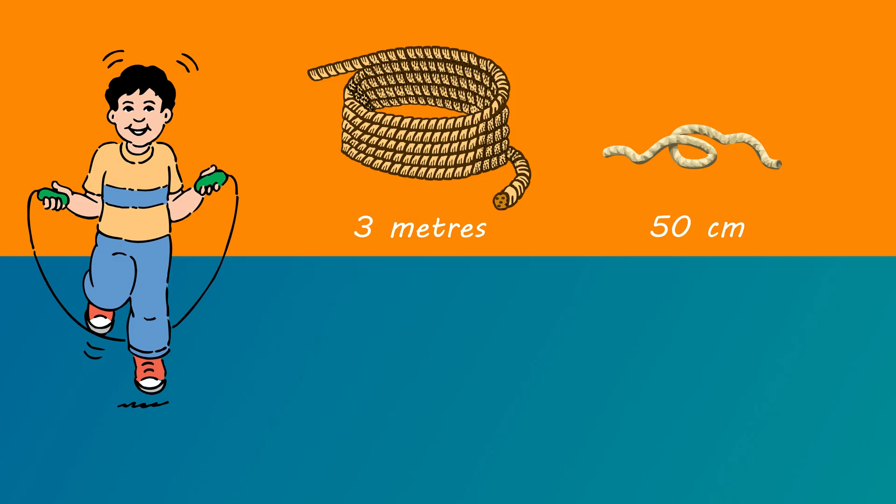This example is about skipping ropes. A large roll of rope is three meters long. The short skipping rope is 50 centimeters long. What is the ratio comparing three meters with 50 centimeters? Well, both are lengths, but they have different units. The first step is to change them to the same unit of length, that is centimeters.